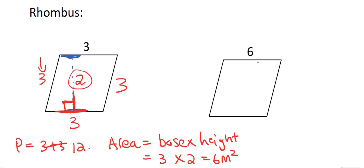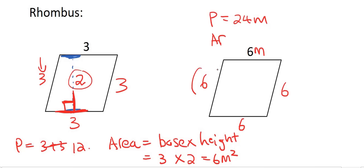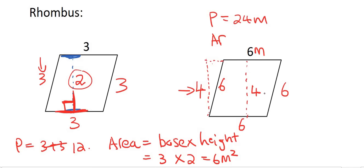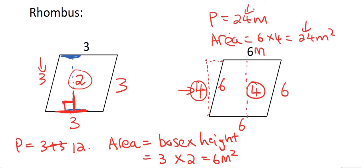Moving on to the example on the right-hand side: we know it's a rhombus so all four sides must be the same. To work out the perimeter, six plus six plus six plus six, or six times four, gives you 24 meters. The area is not six times six — please remember that. Your area must always be from the top straight down to the bottom. Sometimes in a test they'll even give you the height as a dotted line on the outside of the shape. It doesn't matter if the height measurement is shown inside or outside; they would be the same. So the area is six times four, which is 24 meters squared.